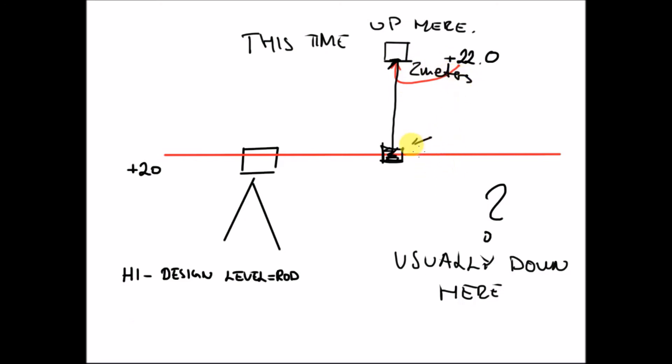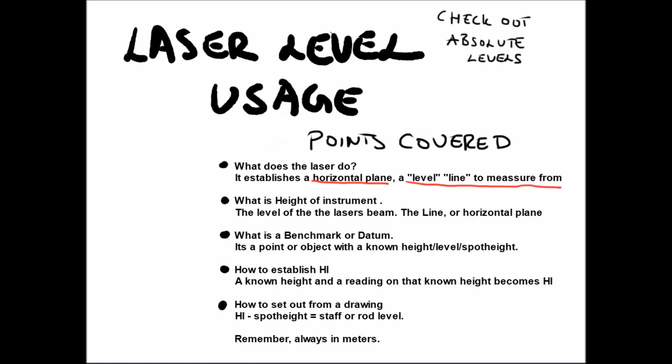If we just quickly review what we learned today. What does the laser actually do? It establishes a horizontal plane. It gives you a line to measure off from. The level of the laser beam. Plus a benchmark, a datum. That is a known height or level wherever you define it. Don't destroy them, don't move them. But that is a known level.